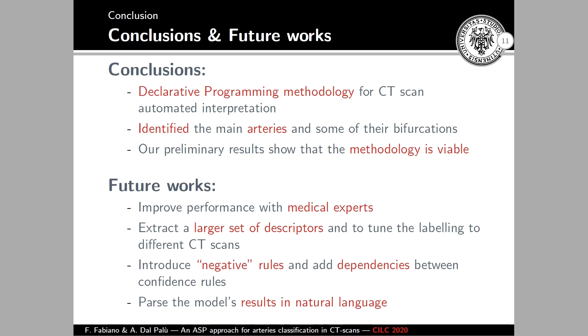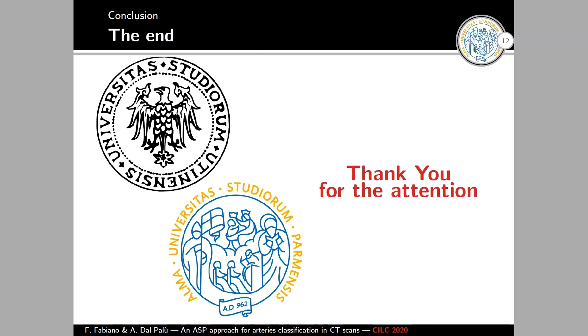This will help in the procedure because it's a starting point, starting to recognize the anatomy of the patient. And from there, we can start and look for anomalies such as tumors. We also tested the model on a real CT scan and we saw that the methodology is viable because the results are promising. For future development, we will try and improve the performance using medical experience or atlas or ontologies. We also plan to introduce negative rules, not only positive ones, and dependencies between these rules. And finally, we will try to parse the results in natural language so that the medical experts can use this program. That's all for the presentation. Thank you very much.